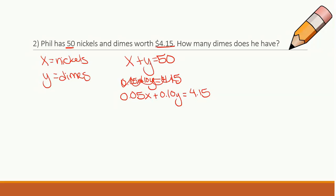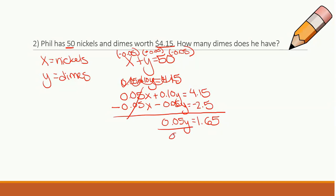So what I can do now is I'm going to multiply this top equation to cancel out my x's. So I'm going to multiply by a negative 0.05. So I'm going to get negative 0.05x minus 0.05y equals 50 times 0.05 is a negative 2.5. X's are cancelled out. I am left with 0.05y equals $1.65. Let's divide by 0.05. And I get y equals 33.